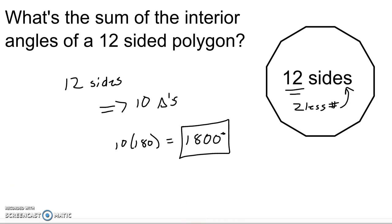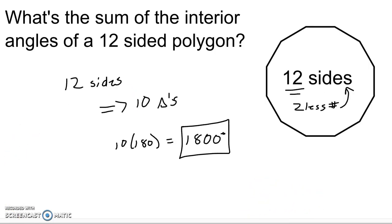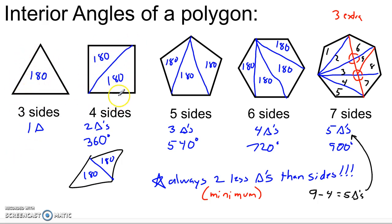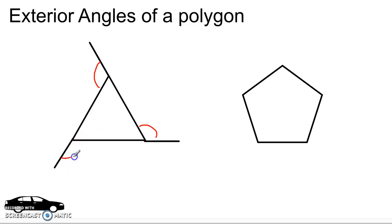So that's interior angles. What about exterior angles? These are a little different. Notice that the interior angles give a different sum depending on the shape — 180 for a triangle, 360 for a quadrilateral, 540 for a pentagon, 720 for a hexagon. An exterior angle is created by taking a side of the polygon and extending it. If I extend each side, I get an exterior angle at each vertex — so a triangle has three of them.